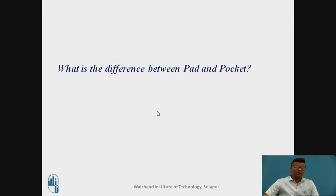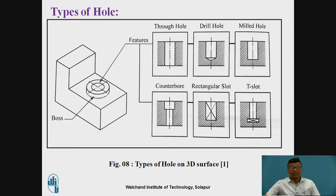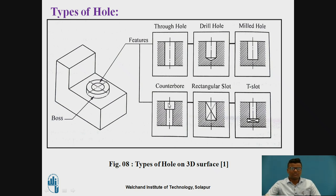Now think about this: what is the difference between the pad and the pocket? What are the different types of holes? You can create the throughout hole as discussed. The drill hole is called peck drilling. The milled hole you can also create. Counter bore you can provide — there are different features in the drill or hole operation. Rectangular slot you can also create inside the hole surfaces. The T-slot and counter sunk can also be provided with the help of the hole command. These are the different types of holes.